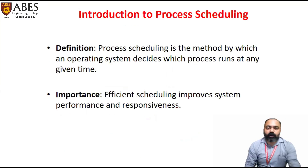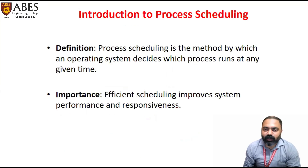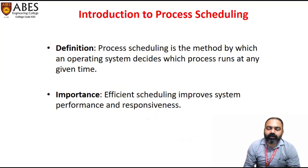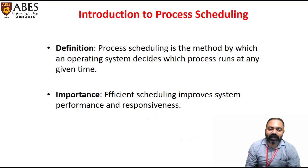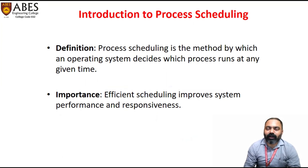Process scheduling is a method by which an operating system decides which process runs at any given time. There are a number of processes inside the system, so we need a mechanism that can manage all the processes so that they all get executed within the time limit, and there should not be any faults like deadlock or starvation.